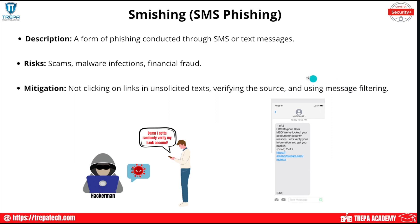Smishing is SMS phishing — a form of phishing conducted through SMS or text messages. The main risks are financial fraud and malware infection, especially if it's a mobile device that touches the enterprise. It's also used for scams and credential harvesting. For example, you might receive a message asking you to verify your bank account. You go to what looks like your bank's login page and enter your credentials — and now the attacker has them.